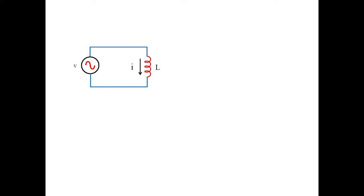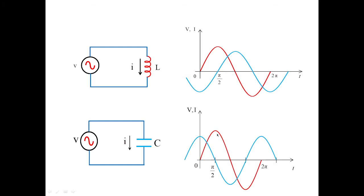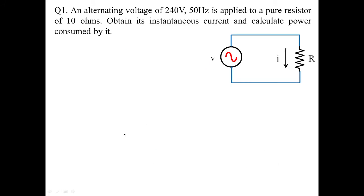From our previous classes, we have seen that whenever a voltage is applied to a pure inductor, the waveforms indicate that the current lags voltage by 90 degrees, whereas in the case of a capacitor the current leads voltage by 90 degrees. If you have a resistive network, the voltage and current are said to be in phase — meaning they reach their starting, final, and maximum/minimum points at the same time. This is how a resistor, inductor, and capacitor behave under AC supply.